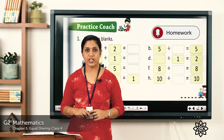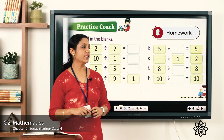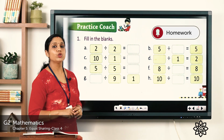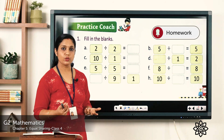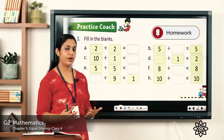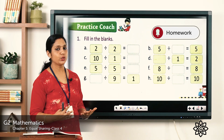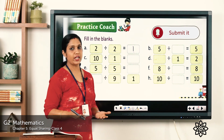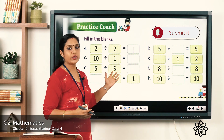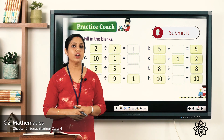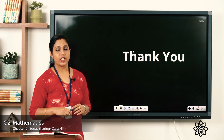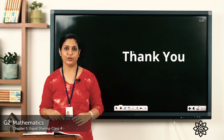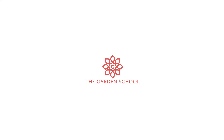In your textbook page number 69, fill in the blanks. The first one: 2 divided by 2 is equal to — the number is being divided by itself, so the answer is 1. Learn the division facts and do the rest of the exercises in your textbook. That's all for today. Hope you understood how to do division using multiplication tables. Thank you!